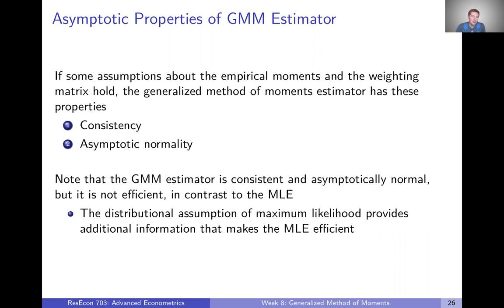The intuition is basically that when we make that distributional assumption about maximum likelihood, or about our data, in order to use maximum likelihood estimation, that's kind of like giving our estimation procedure some extra information that's going to allow it to be more precisely estimated. And when we don't give it that information with GMM, we're not necessarily going to achieve that same level of efficiency. So there is a trade-off here.